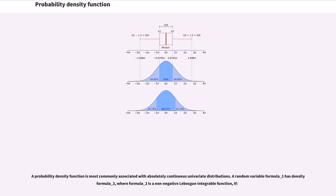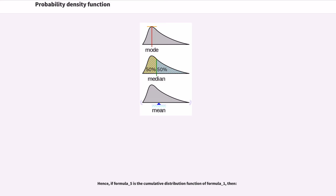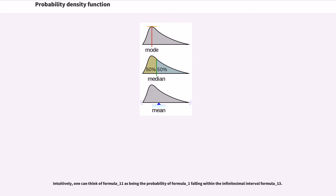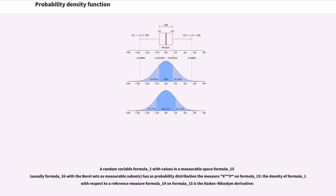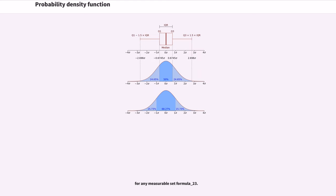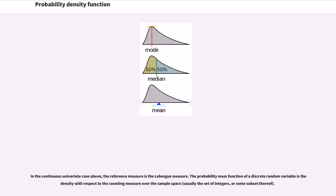A probability density function is most commonly associated with absolutely continuous univariate distributions. A random variable X has density f, where f is a non-negative Lebesgue-integrable function. If F is the cumulative distribution function of X, then the PDF can be derived accordingly. Intuitively, one can think of f(x)dx as being the probability of X falling within the infinitesimal interval [x, x+dx]. A random variable with values in a measurable space has as its probability distribution the pushforward measure, and the density with respect to a reference measure is the Radon-Nikodym derivative. The reference measure in the continuous univariate case is the Lebesgue measure.